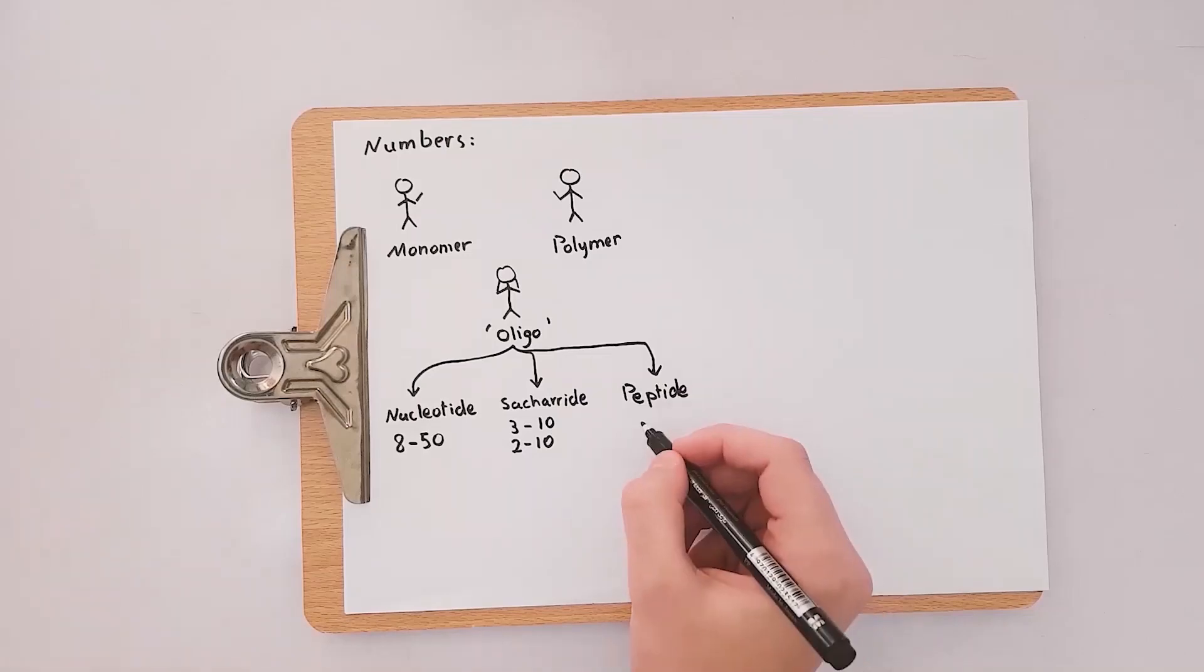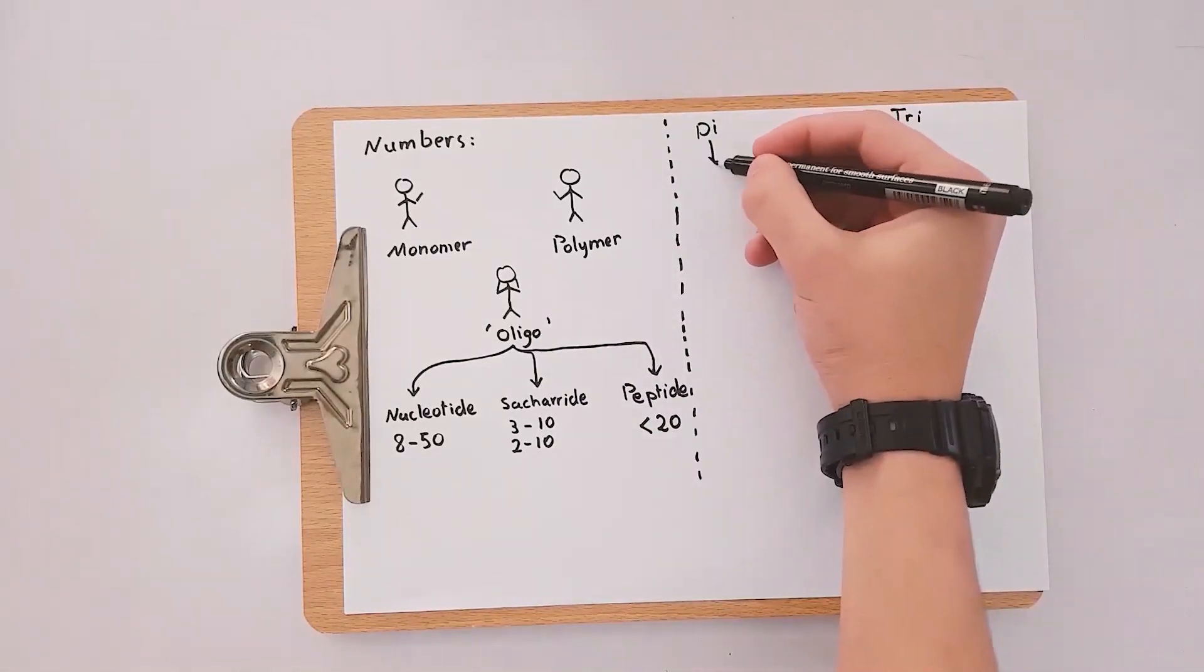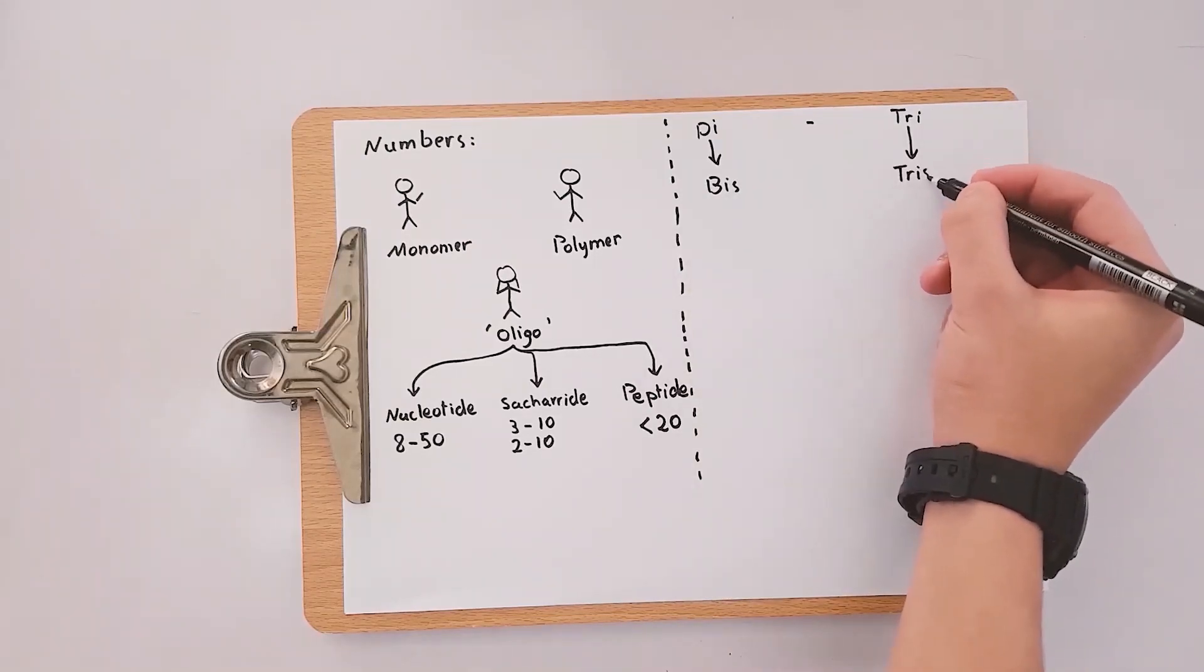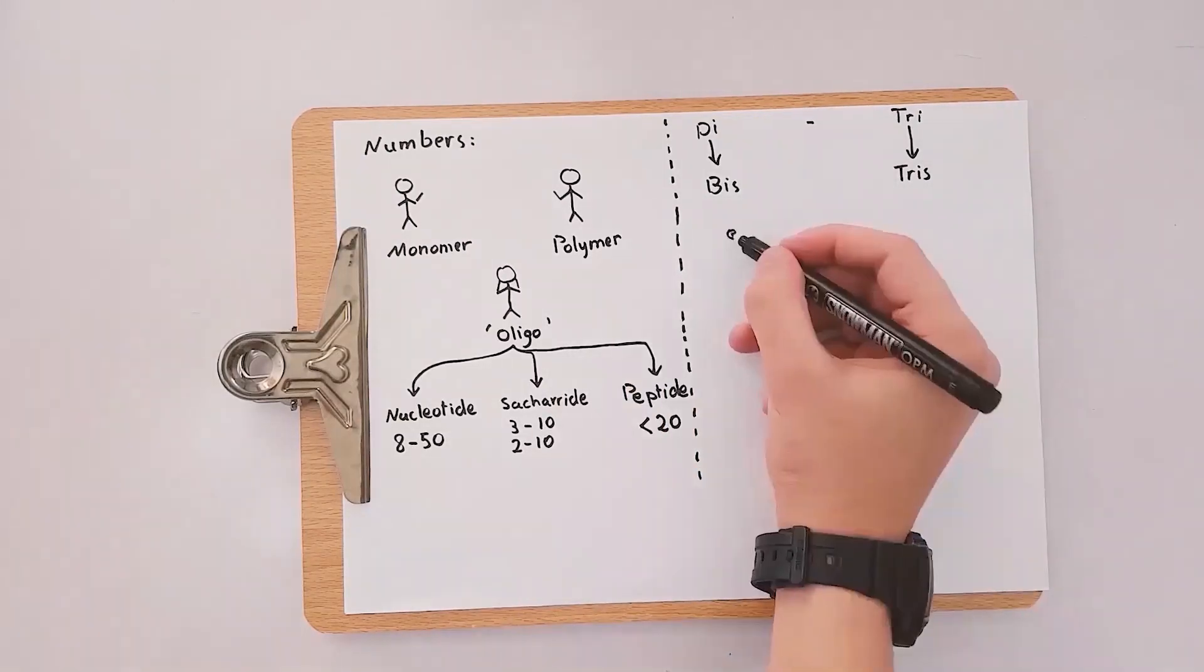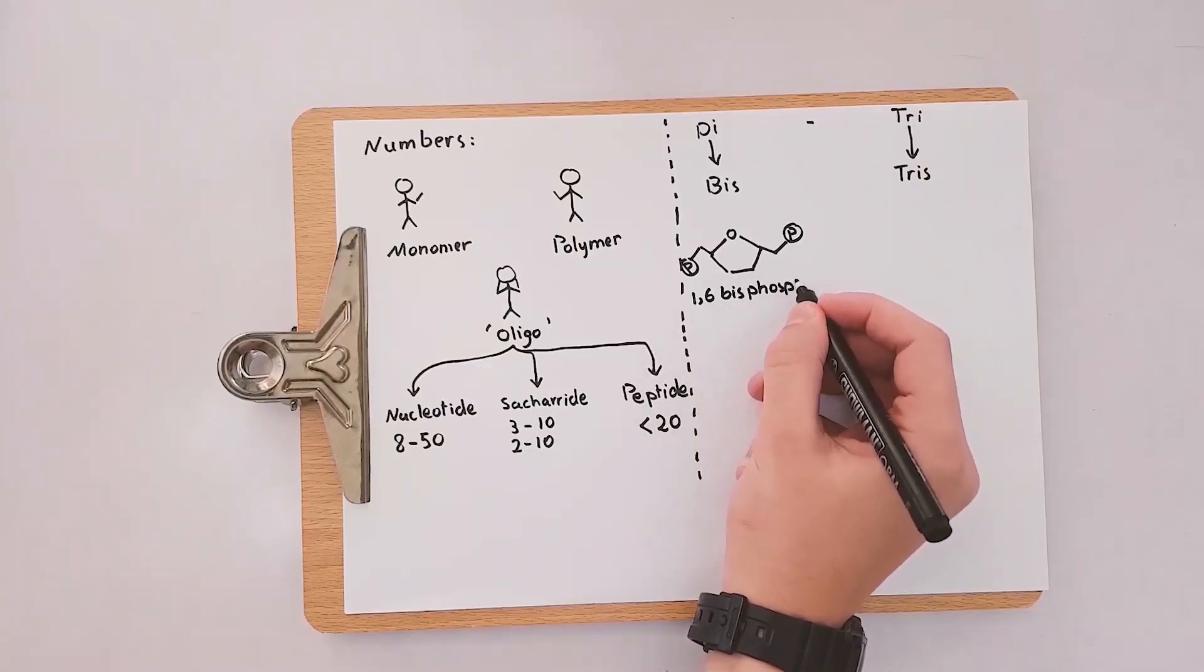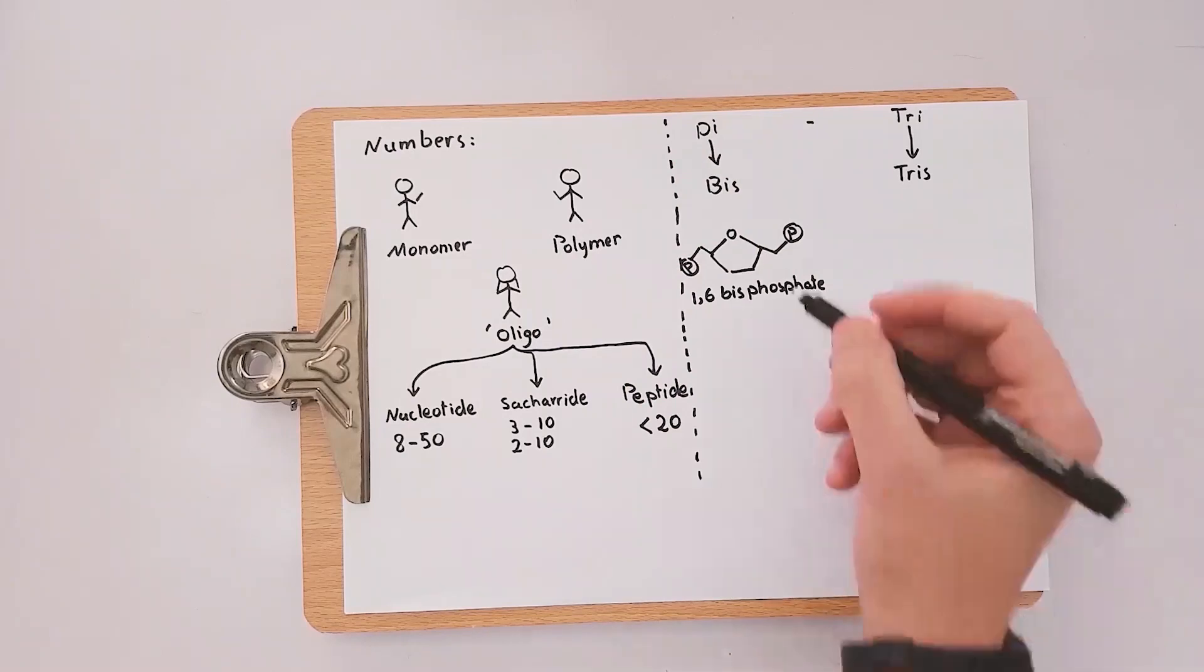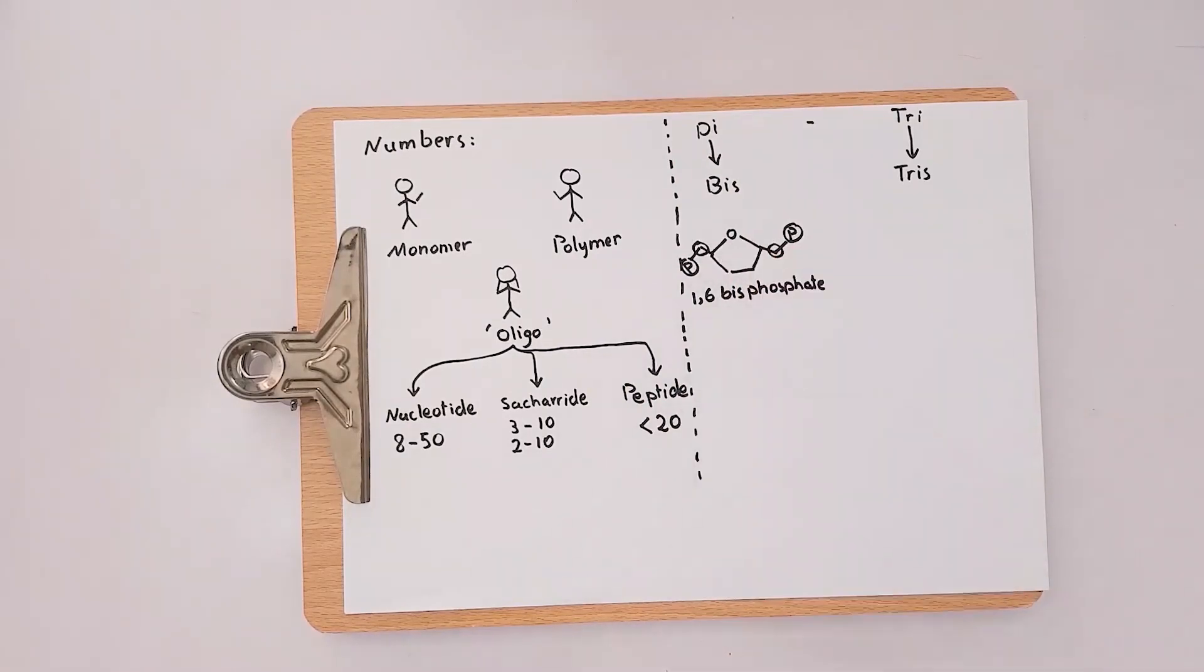We all know the di and tri prefixes, but did you hear before the prefix bis and tris and wondered if there is a difference? I will use the compound fructose 1,6-bisphosphate as an example. The two phosphate groups acquired the prefix bis instead of di because they are separated by more than one atom.